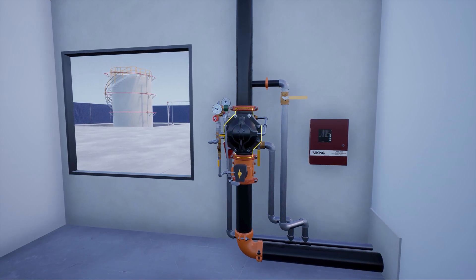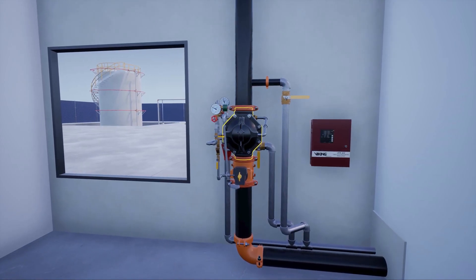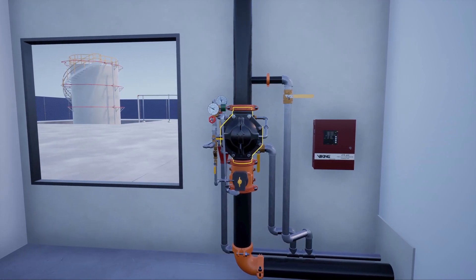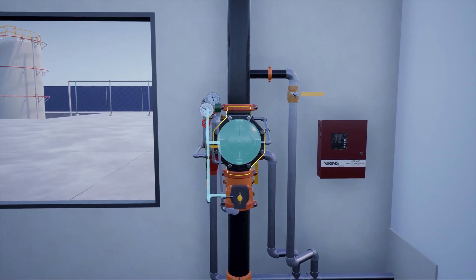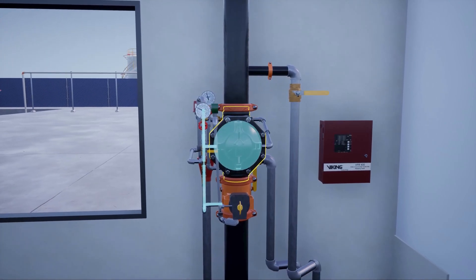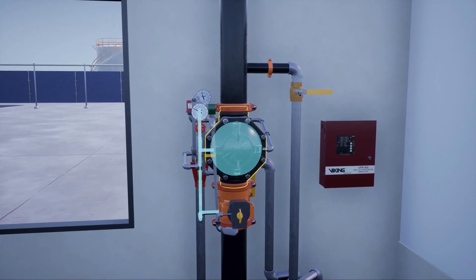The VXD deluge valve is a flood valve with only one moving mechanism. The valve is held closed by priming water pressure trapped in the priming chamber. This keeps the outlet chamber and the system piping empty.